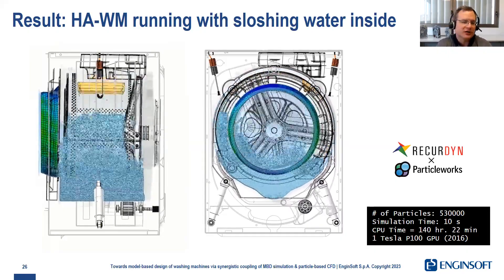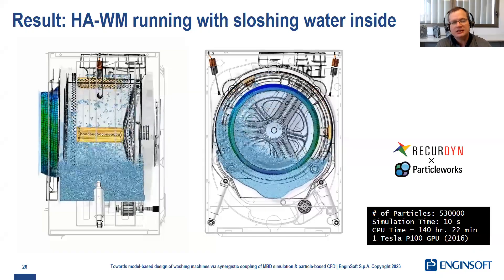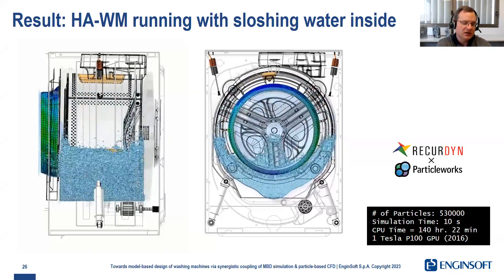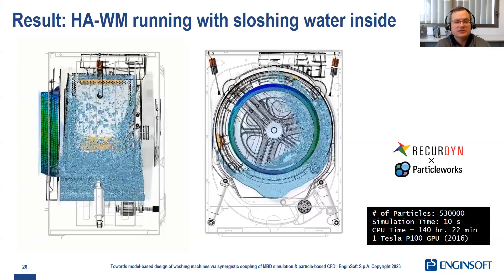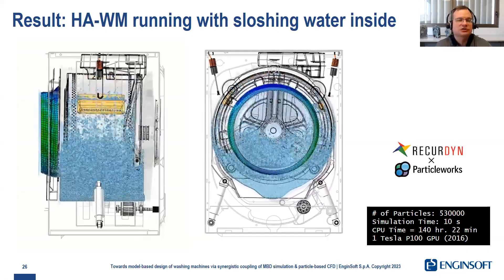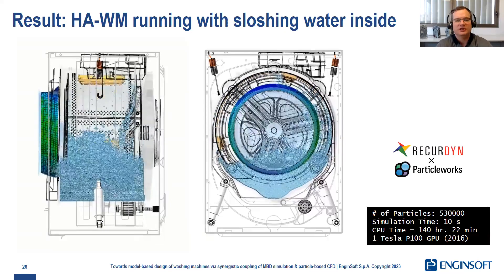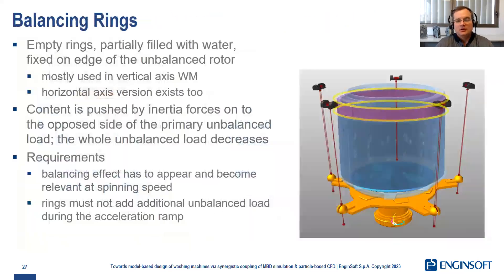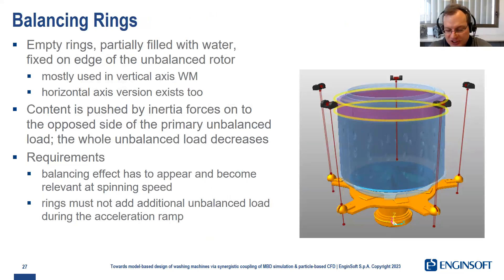There are plenty of options for post-processing to watch where the fluid is going and to measure pressure, velocities, and so on. As usual for a fluid dynamic simulation — in this case a co-simulation — the post-processing that you can perform is basically the same as in a normal CFD environment. Balancing rings are empty rings partially filled with water that are fixed to the edges of the rotating drum.